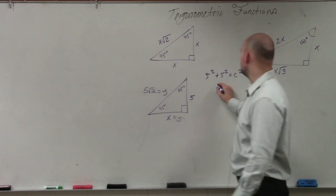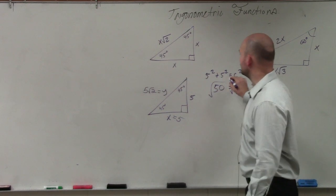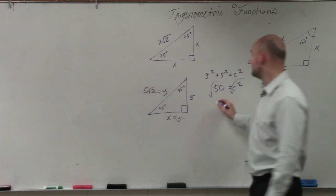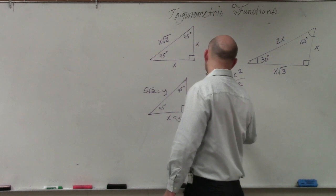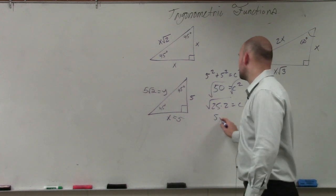25 plus 25 is 50 equals c squared. Square root, square root. Square root of 50 is the same thing as the square root of 25 times 2. Square root of 25 is 5 square root 2.